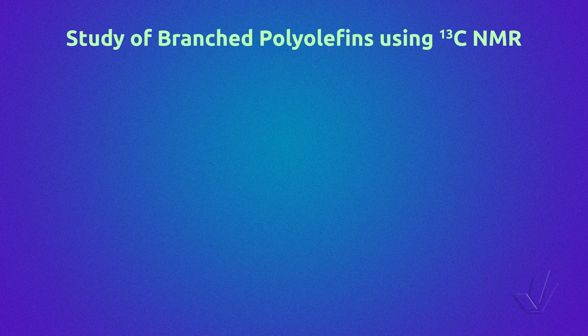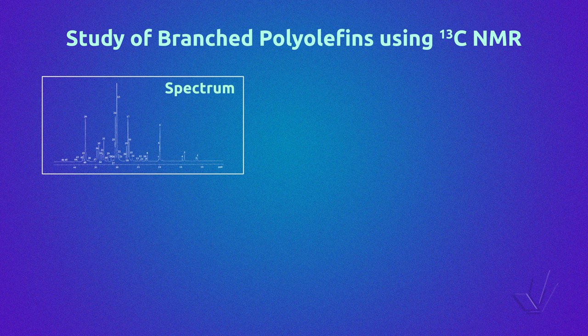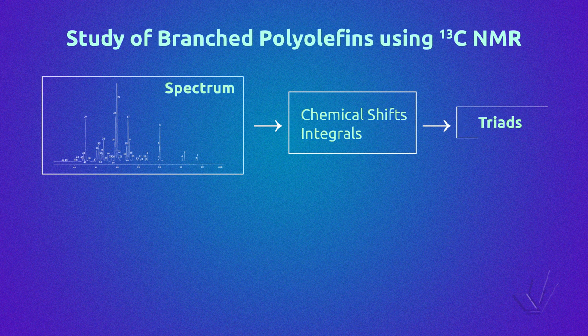In a decoupled carbon-13 NMR, each type of carbon gives a peak with a determined chemical shift in ppm. In a quantitative NMR, each peak integral gives information about the number of carbons of this type in the sample. So those are the main parameters that can be extracted from a spectrum: the chemical shift and the integrals. From them, we can obtain the triad sequences of a copolymer.